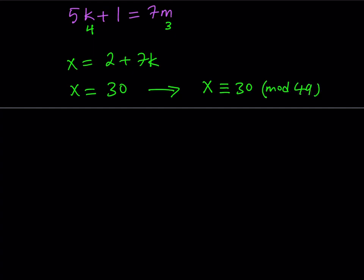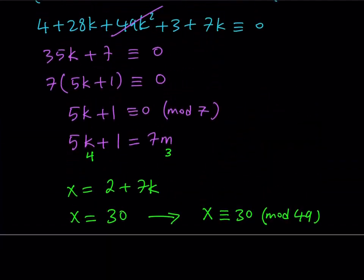So I'm going to be writing it as x ≡ 30 (mod 49). This means that any number in the form 30 + 49 times an integer will be a solution to this congruence. So let's go ahead and find the other solution, if there is any, and then we'll put it together at the end.